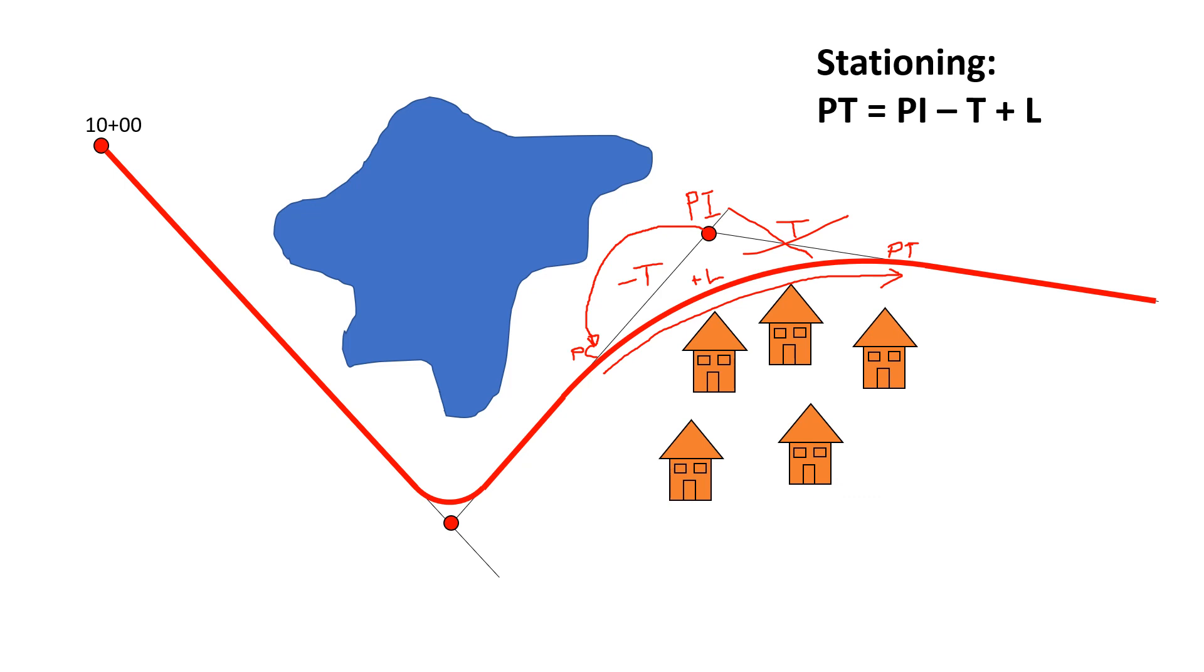The key thing here is all of our stationing for horizontal alignment happens along the centerline of the roadway, so we need to make sure that we backtrack to the PC and then move along the length of the curve if we're given the PI station.